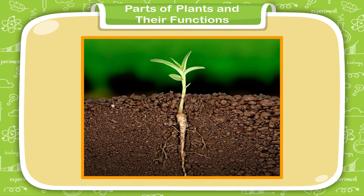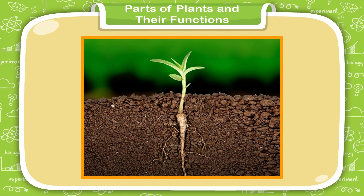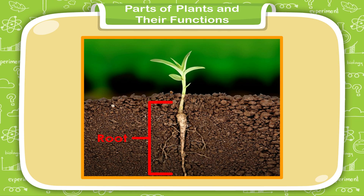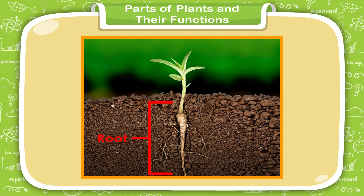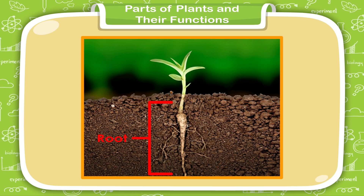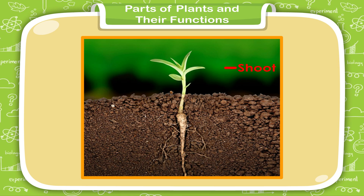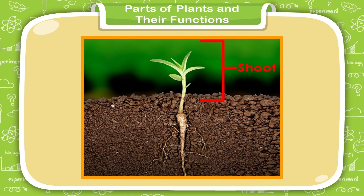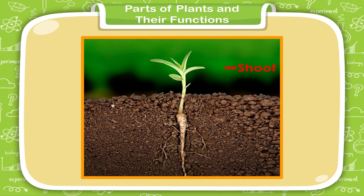A plant has two main parts: the root, which grows under the soil, and the shoot, which grows above the soil.